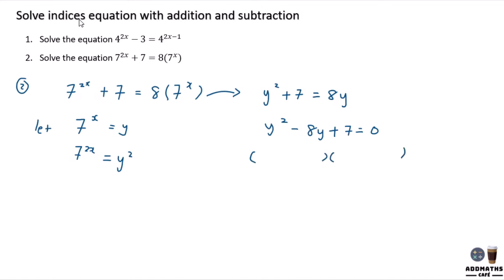Factorize this equation, you have (y - 7)(y - 1). So both sides put negative. You know that y equal to 7, y will be equal to 1. And y is your 7^x.